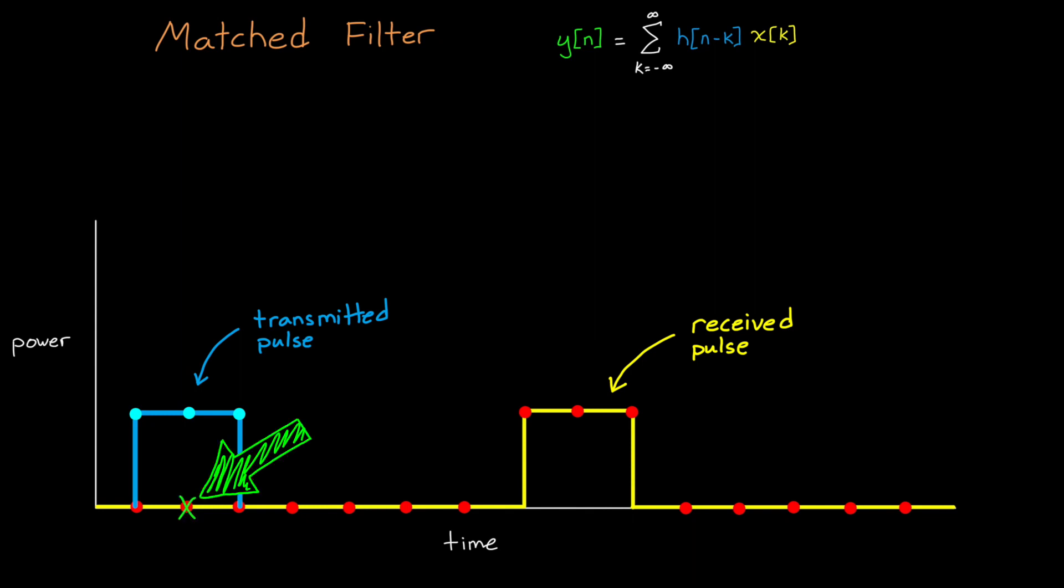I should note that I'm showing the summed value, that's this X here, in the center of the filter, when really it would be at the current time, which is this far right. However, in processing we usually account for the width of the filter and offset the result like I'm showing here so that the peak of the received pulse isn't shifted in time.